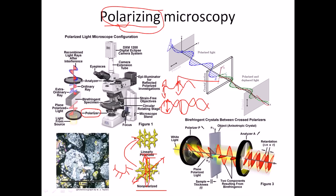Not only the polarizer is important, but another component called the analyzer is also critical. The analyzer helps us analyze the spectrum and the image we look through. These two components — the polarizer and the analyzer — are the most important mechanical parts of polarizing microscopy; all other parts are common to regular light microscopy.